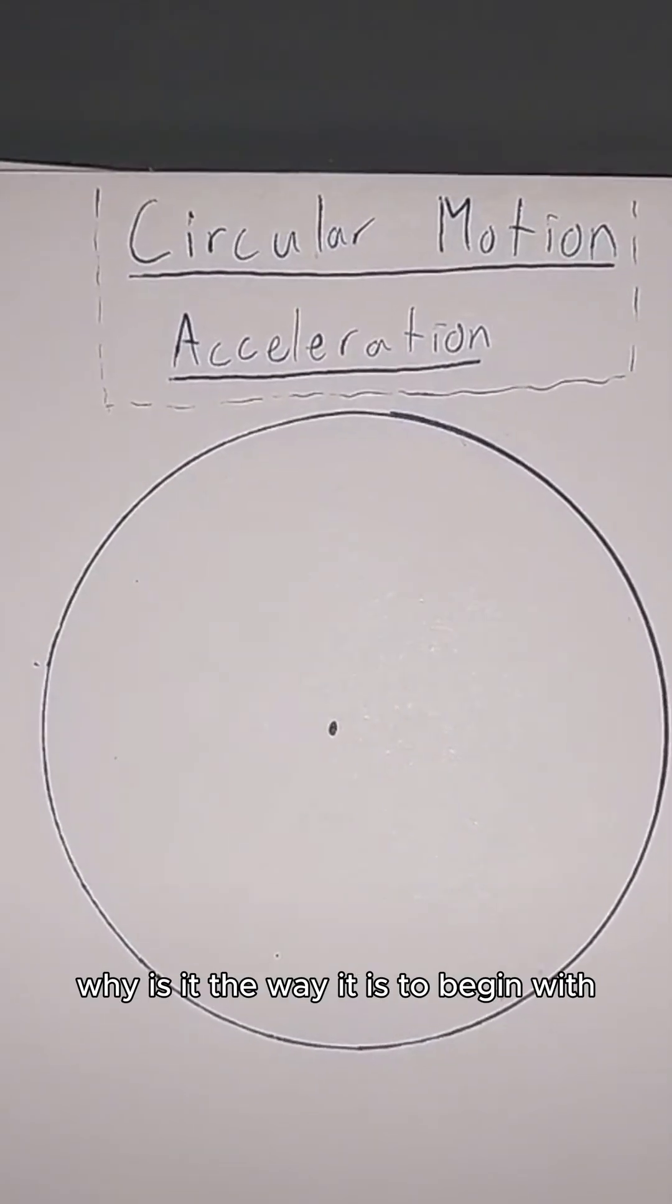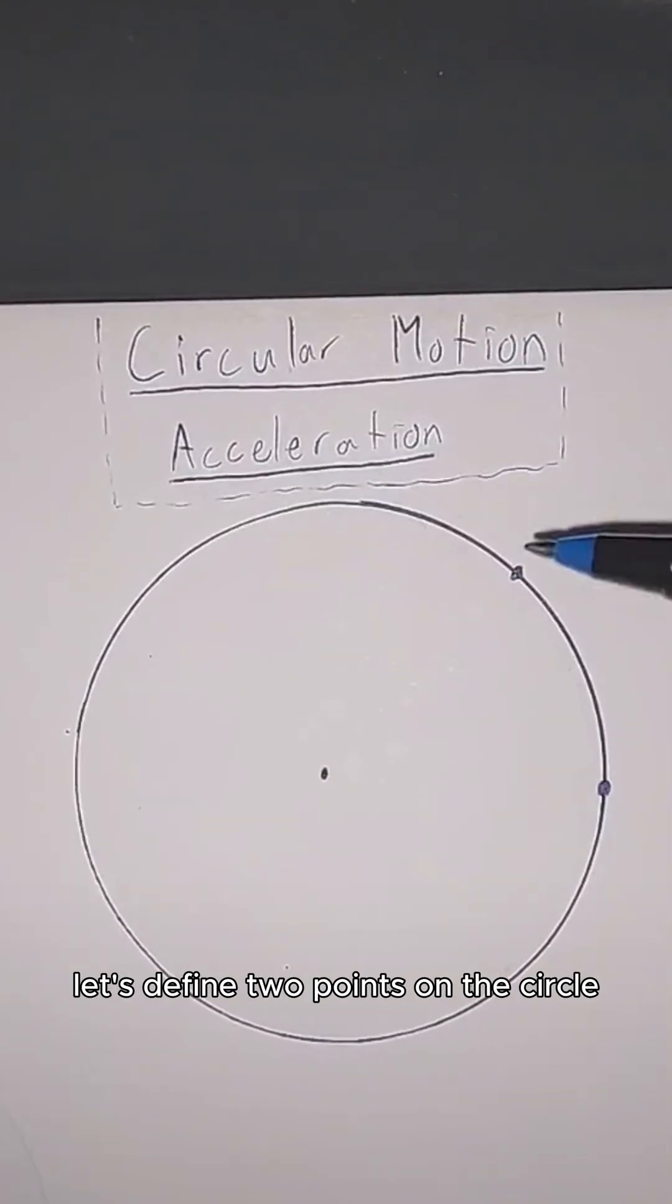Acceleration in uniform circular motion. Why is it the way it is? To begin with, let's define two points on the circle.